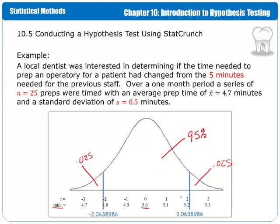If you take the number of minutes and standardize them by subtracting the mean and dividing by the standard deviation, then our hypothesized 5 minutes is here in the middle. The standard error tells us how far we go out in either direction. We know that the sample standard deviation is 0.5, and dividing by the square root of n gives us 0.1. So we go 5, 5.1, 5.2, 5.3 and so on in both directions. The t-distribution calculator tells us that minus 2.06 is the t-value so that we have 0.025 on that side and 95% in the middle, and positive 2.06 is the same value for the other tail.